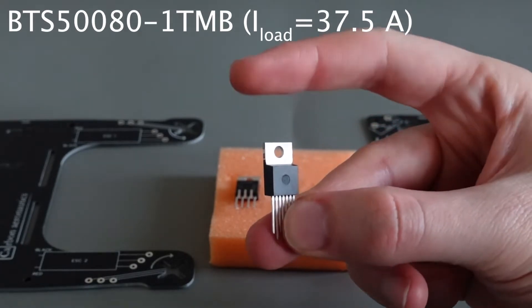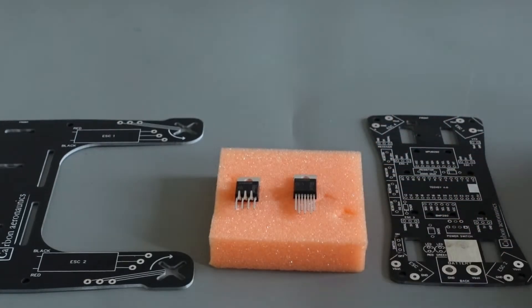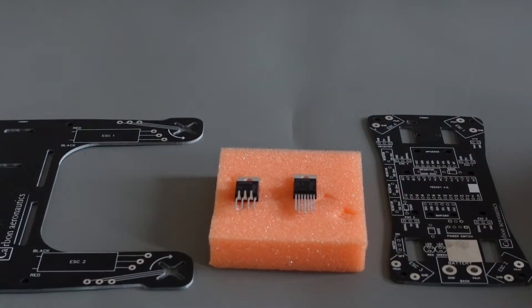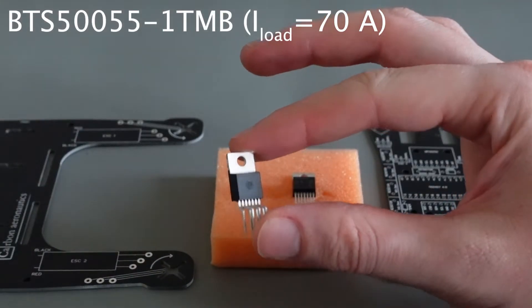Two high-side power switches can be used in this project. The first one is a switch with a load current of 37 amps. The second switch has a load current of 70 amps.